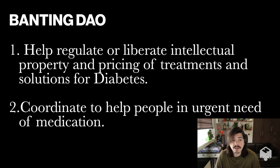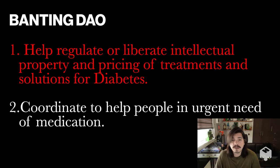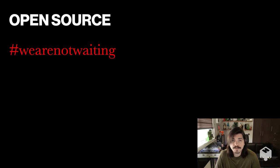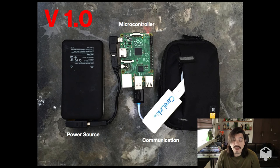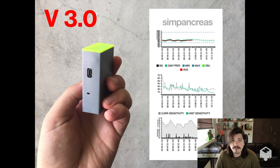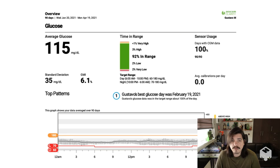There are many things that the community has done that have worked really well, particularly initiatives involving circumventing regulations and intellectual property. The #WeAreNotWaiting movement, which you can search on Twitter, tells the incredible story of people with diabetes and their relatives using open source software and hardware to advance quality of life for people with diabetes, all for free in their spare time. I was involved in this movement and have been greatly benefited from it.